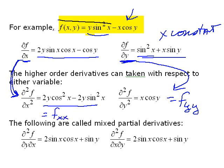Now for the mixed partial, I start with f_x and take the derivative with respect to y, getting 2 sine x cosine x plus sine y. Applying the same rule to f_y and taking the derivative with respect to x gives the same result. And it's the same because of continuity of all these partials.